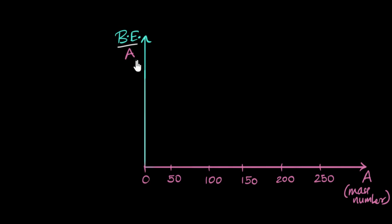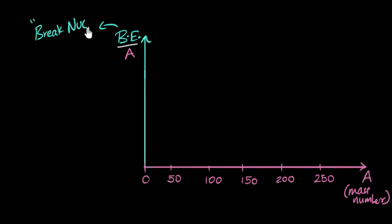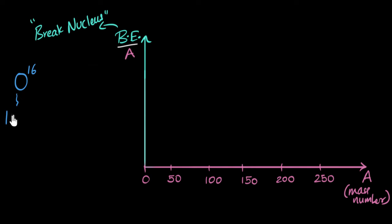Let's explore the binding energy graph and use that to understand nuclei and nuclear forces a little better. But before we start, a quick recap: what's binding energy? Binding energy can be thought of as the energy needed to break the nucleus apart. For example, if you take oxygen-16 — 16 is the mass number, meaning total number of protons and neutrons inside it — then its binding energy happens to be close to 128 mega electron volts.